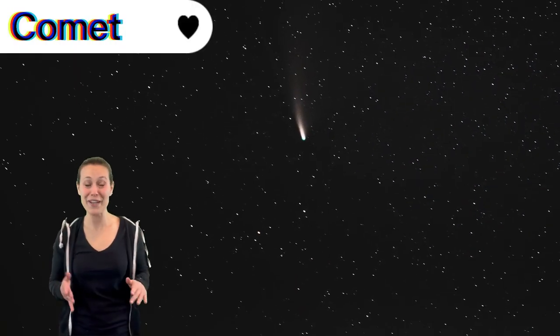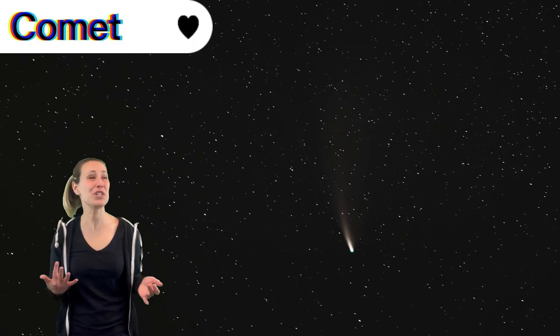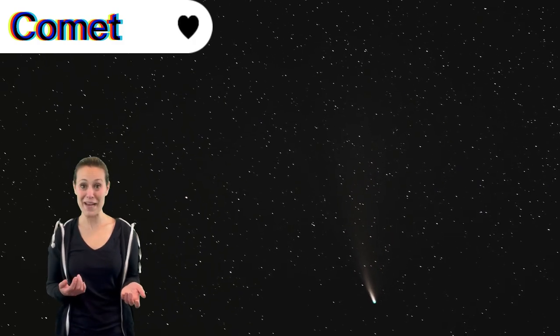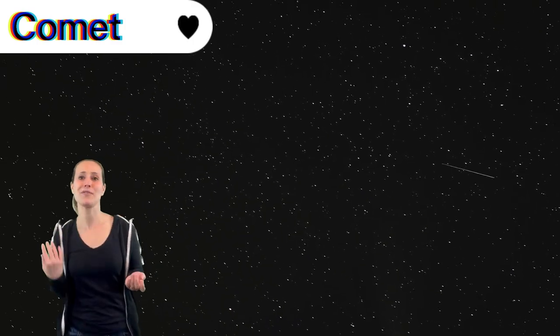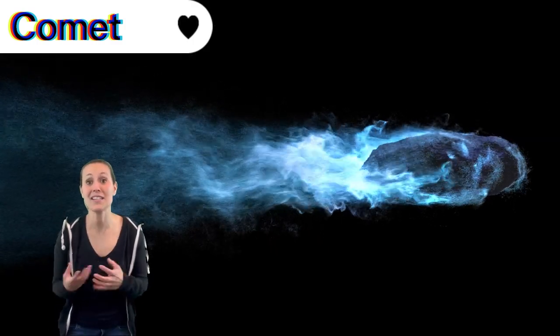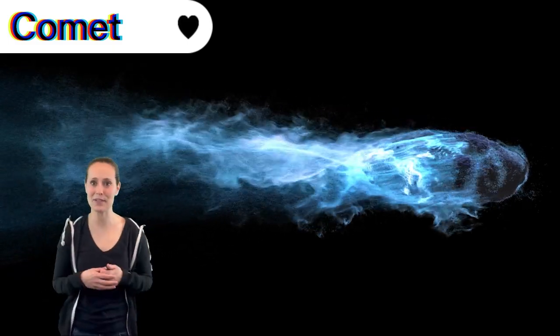Have you ever seen a comet shooting through the sky? A comet is sort of like a huge dirty snowball. It's made of icy gas and rock. Comets have huge orbits around the Sun, and sometimes it gets too close to the Sun and starts to melt. And that's when we see a little tail following the comet along.